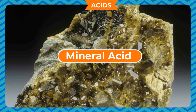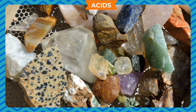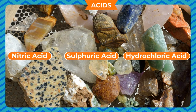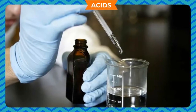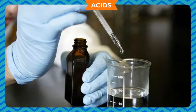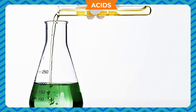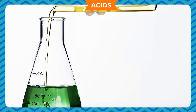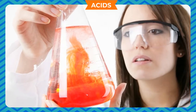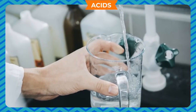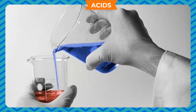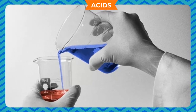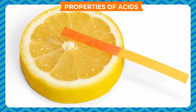Some common examples of mineral acids are nitric acid, sulfuric acid, and hydrochloric acid. An acid is said to be dilute if it contains a high percentage of water. On the other hand, if the percentage of water is low, we call it a concentrated acid. Thus, an acid is concentrated or dilute depending on the amount of water present. Adding water to the acid dilutes it, whereas removal of water makes the acid concentrated.